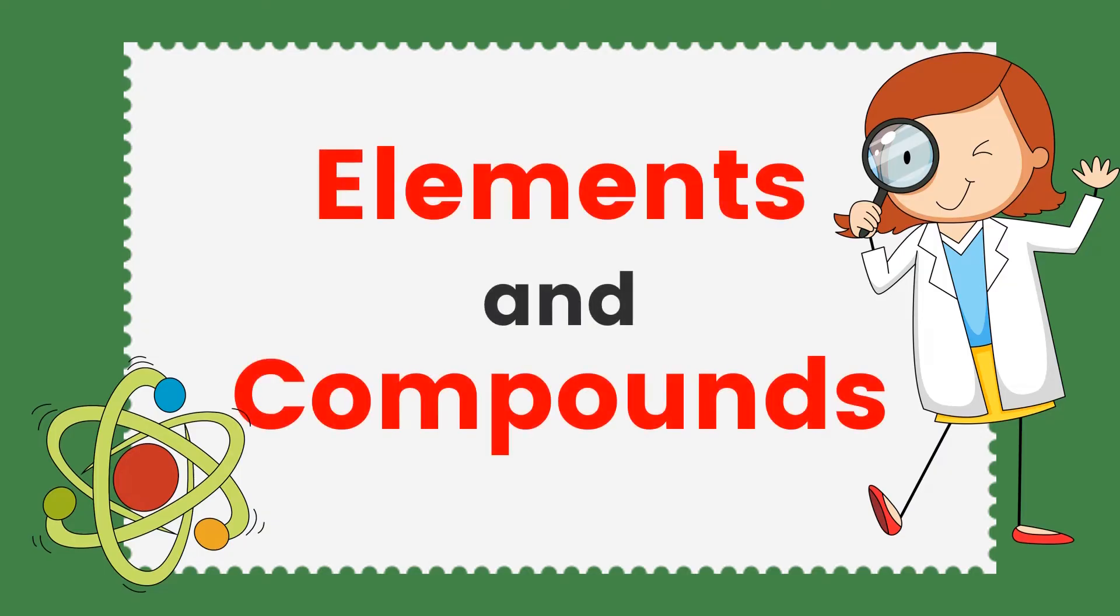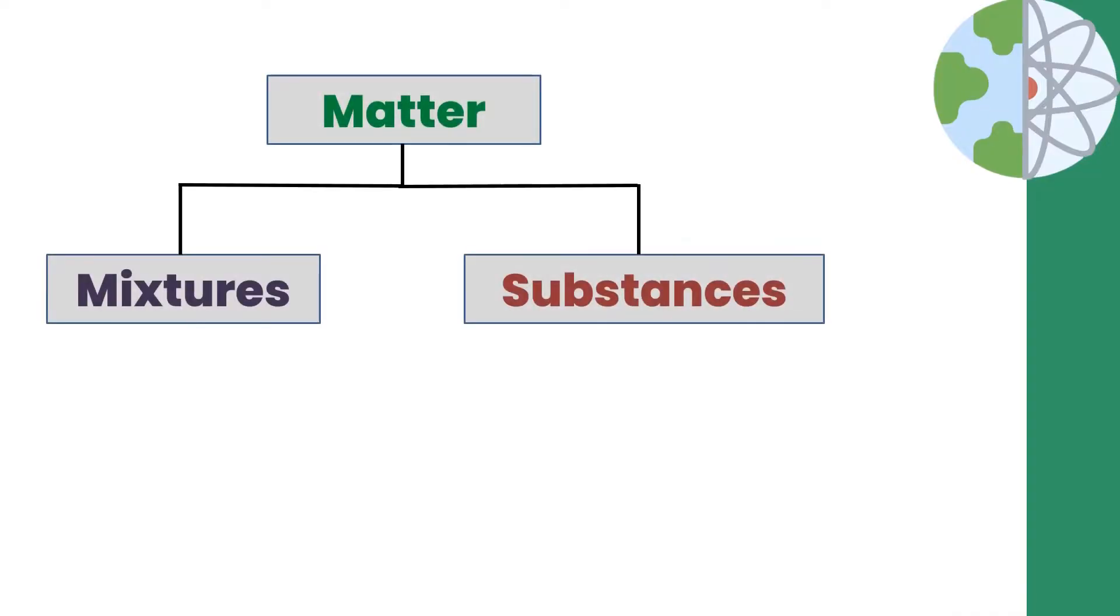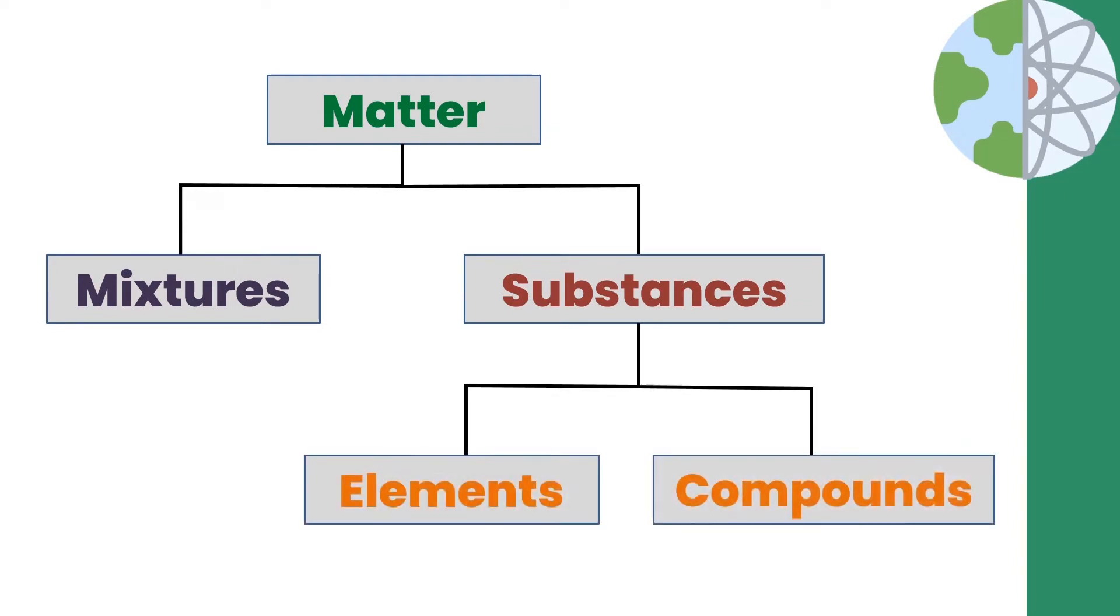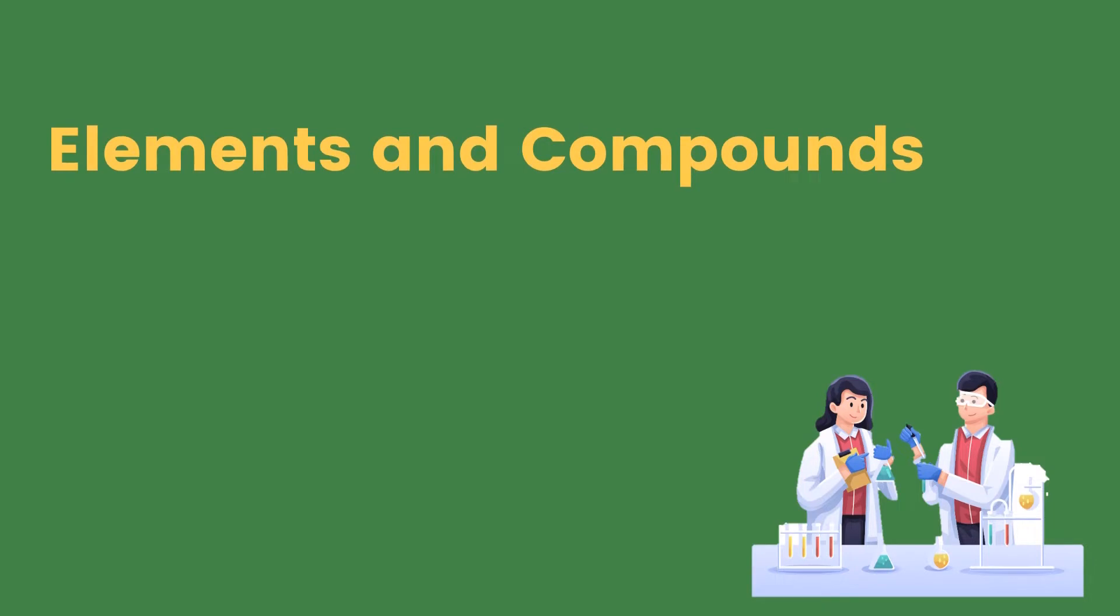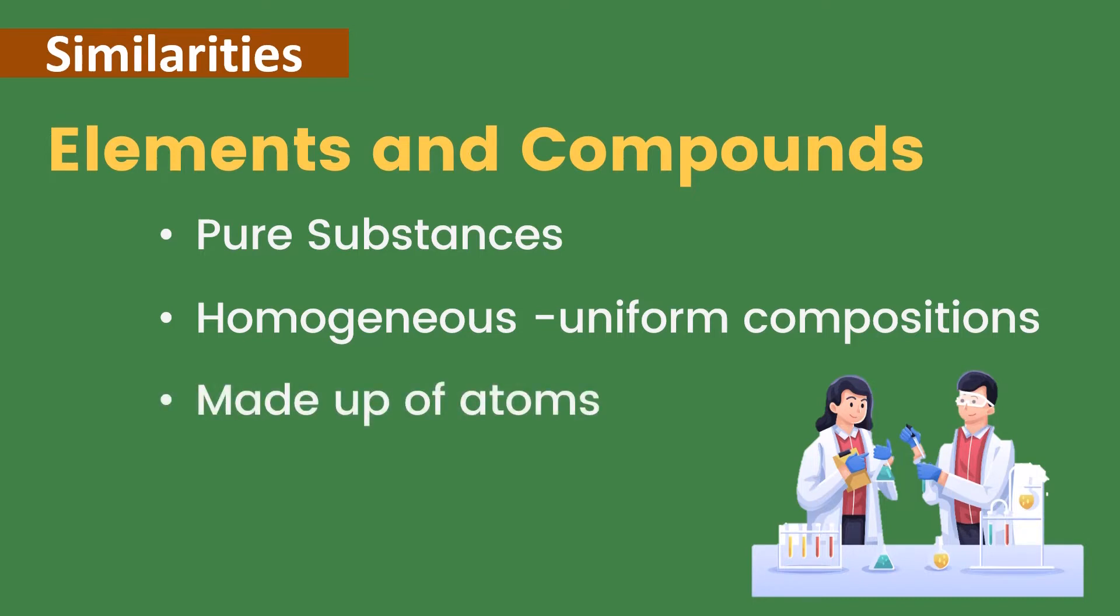Elements and compounds: matter can be classified as mixtures and substances. Substances can be elements and compounds. Elements and compounds have similarities. They are both pure substances, homogeneous or have uniform compositions, and are made up of atoms.